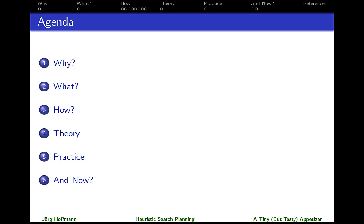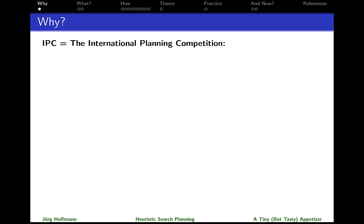I'm going to start with why. Why do we want to consider heuristic search planning? One possible motivation is the International Planning Competition, IPC. The first edition was run in 1998. Let me start with the second edition in the year 2000, where the clear winner was based on heuristic search.